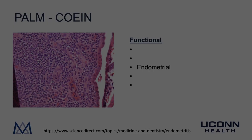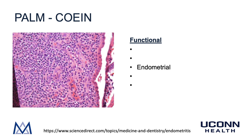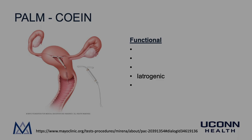The E in PALM-COIN stands for endometrial — which essentially stands for endometritis. Chlamydia trachomatis can live on the cervix and can ascend to cause salpingitis. In a similar way, Chlamydia trachomatis, Neisseria gonorrhoeae, and other bacteria from the vagina can cause a low-level endometritis that does not cause an overwhelming infection but can lead to heavy and often painful uterine bleeding.